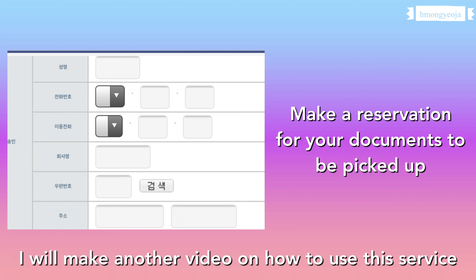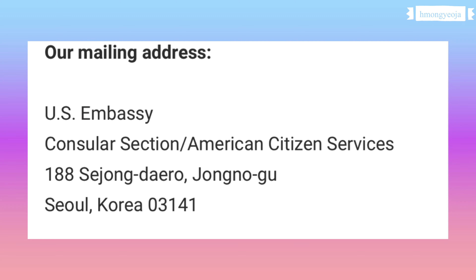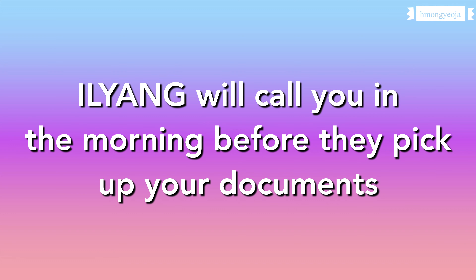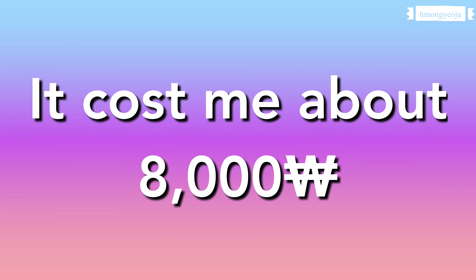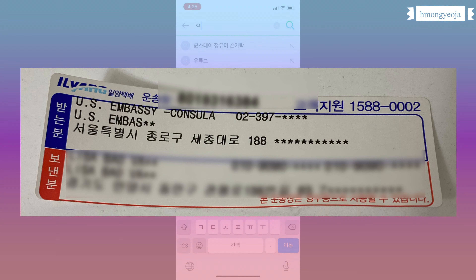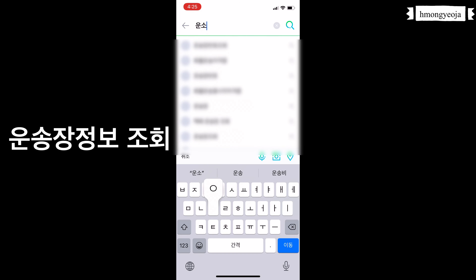They have a courier service you can use on their website. Once you go on the website, fill out the information and make an appointment for them to pick up your documents — your name, address, phone number, and the embassy address. I made a reservation for my documents to be picked up the next day. They will call you in the morning and tell you what time they will arrive. You don't need an envelope; they will put your documents in their own envelope. Make sure you have cash because you will have to pay the delivery fee when they arrive — it was about 8,000 won.